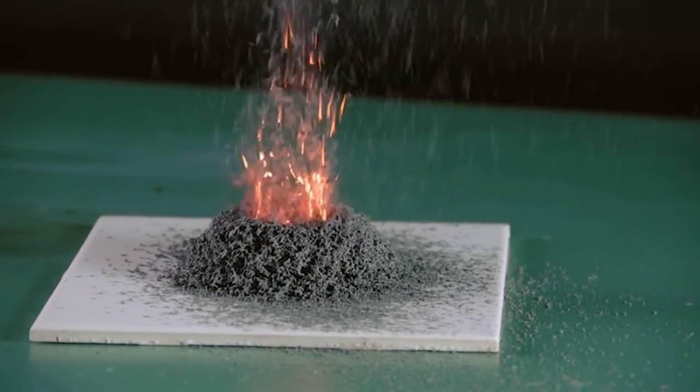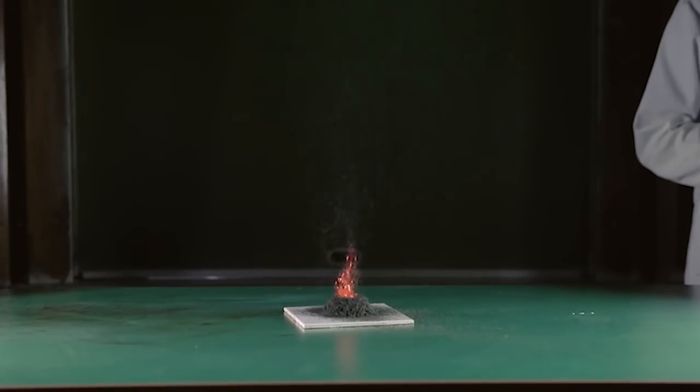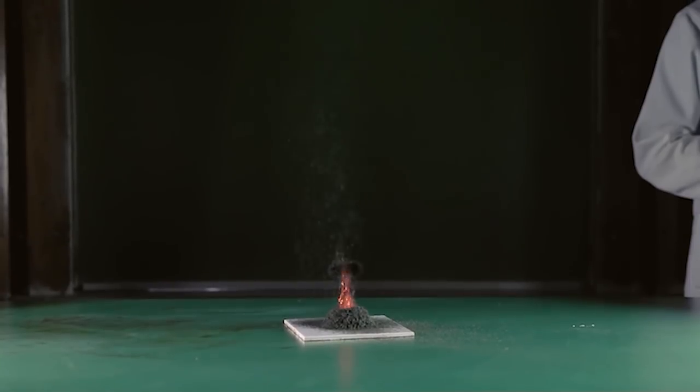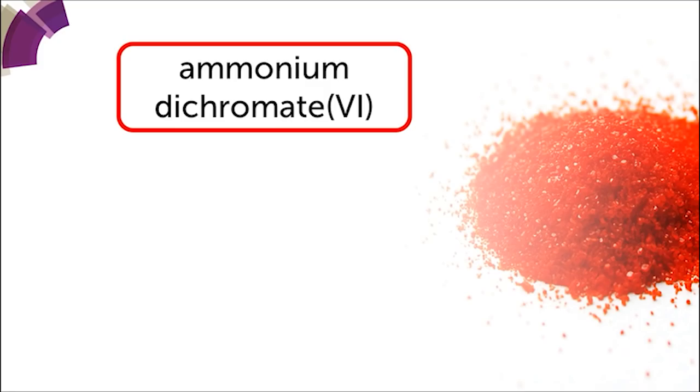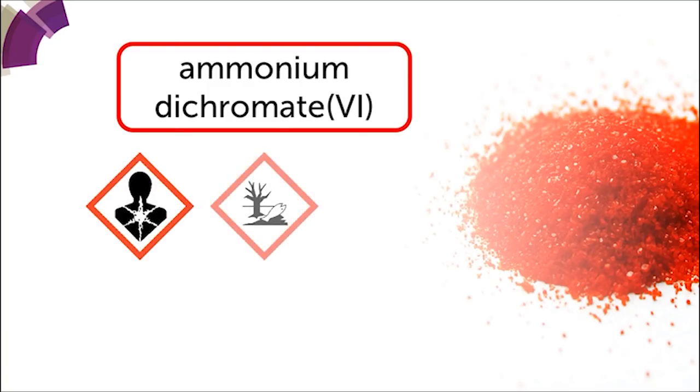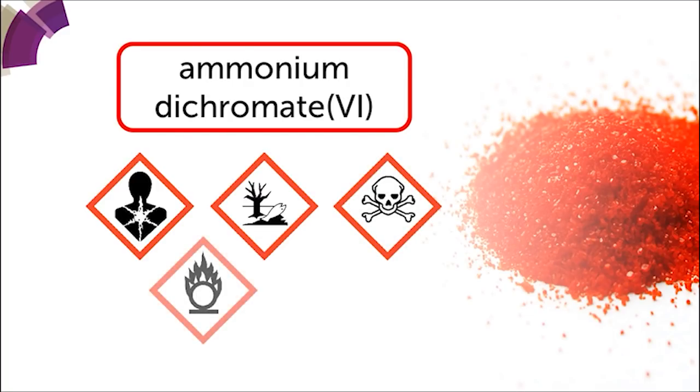The ammonium dichromate volcano has to be one of the most famous demonstrations a chemistry teacher can perform. But the safety issues surrounding the handling of Chromate 6 can make it tricky to perform in a responsible way, showing respect not only for your own health, but of the health of other staff who work in your room after you.